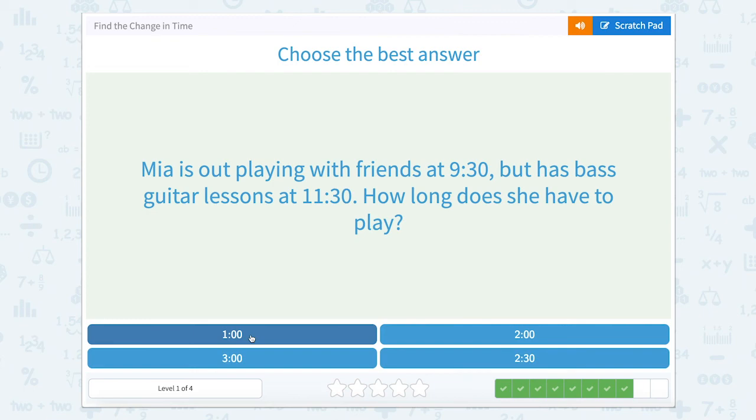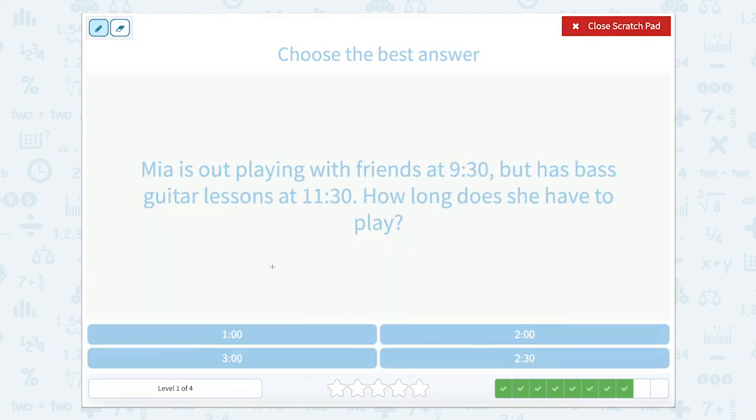Mia is out playing with friends at 9:30 but has bass guitar lessons at 11:30. How long does she have to play? Well, it's 9:30. She can play for a certain amount of hours. So plus a certain amount of hours and that's going to get her to 11:30. So we need to figure out the time difference between 9:30 and 11:30. Well, 9:30 and 11:30 both have 30 minutes. So we can just focus on our hours.